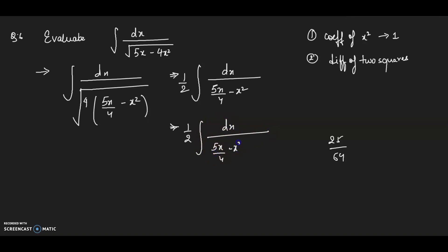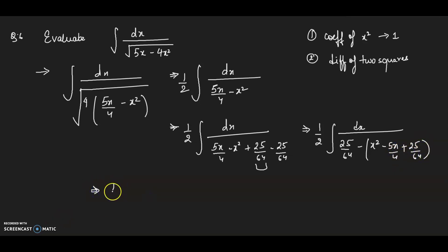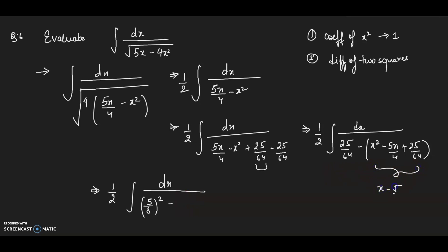This becomes 1/2 integration of dx divided by √(25/64 minus (x² − 5x/4 + 25/64)). So this is 1/2 integration of dx divided by √((5/8)² − (x − 5/8)²). I hope you know the formulas for completing the square.